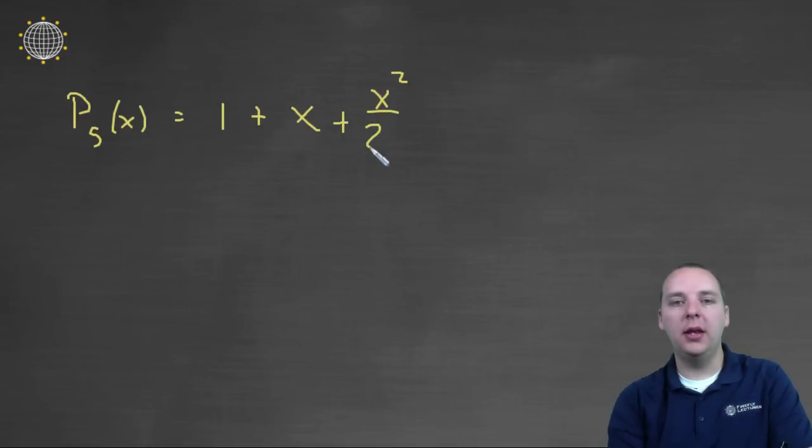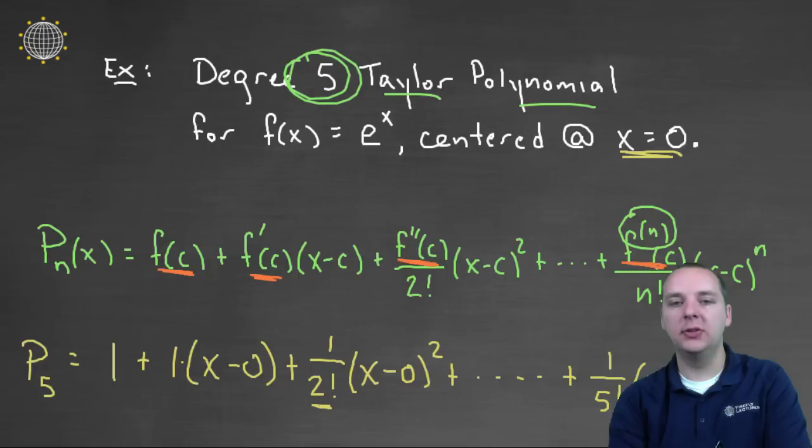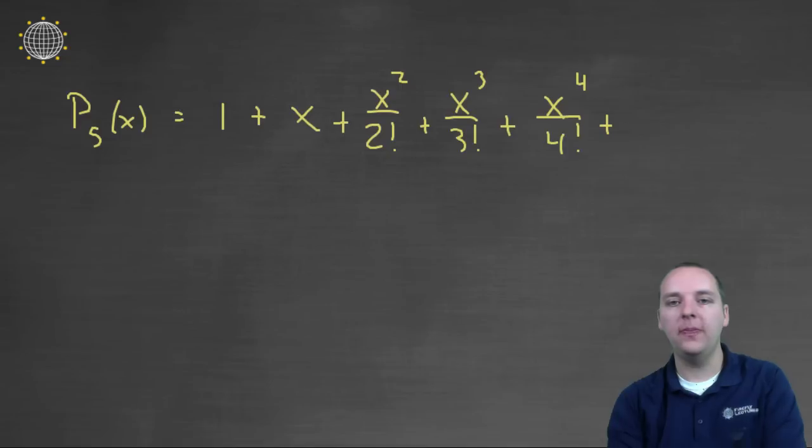And if you're paying attention to the pattern, the next one will be x to the third over three factorial, x to the fourth over four factorial, plus, and let's look at the very last one as well, x to the fifth over five factorial. So that will be the last term, so x to the fifth over five factorial. So we can write it this way.